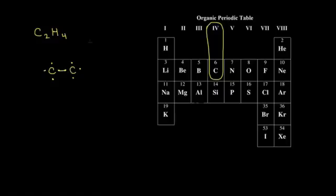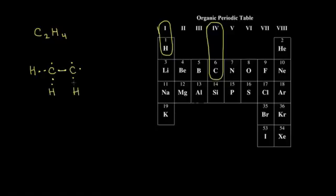Now for the four hydrogens — hydrogen is in group one on our periodic table, so hydrogen has one valence electron. It makes sense to put two hydrogens on each carbon. So I'll put one hydrogen here and another hydrogen on this carbon, then go ahead and put in the two more hydrogens on the carbon on the right. When I connect my dots, I can see that I have a bond between carbon and hydrogen.